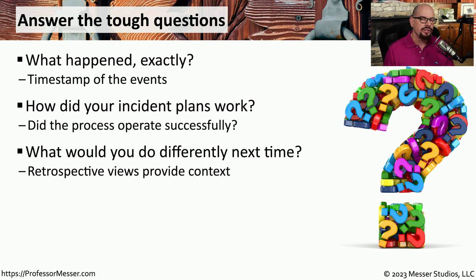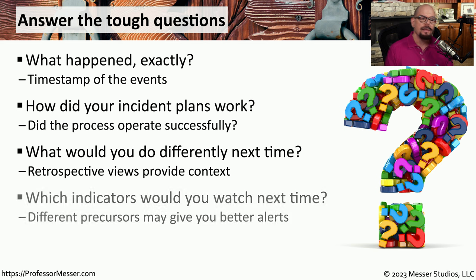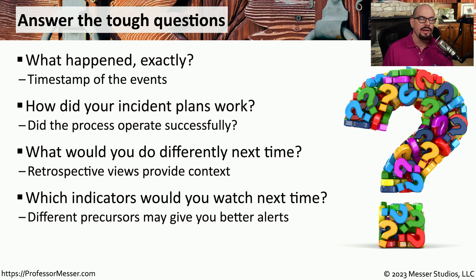We can then make decisions on what we might do differently next time, and then integrate those changes into our incident planning process. It might also be useful to know if we missed any of the indicators that might have warned us that this incident was going to occur. And if we did miss something, we might want to change our monitoring so that we're looking at some additional indicators.